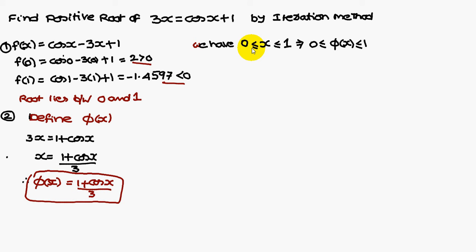Phi of x satisfies this condition and modulus of phi dash of x is also less than 1 for x belongs to 0 and 1, the interval where the root lies. Phi dash of x is minus sin x by 3. If you differentiate, 1 differentiation is 0, cos x differentiation is minus sin x by 3. Therefore, iteration method can be applied.